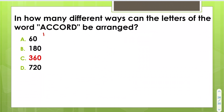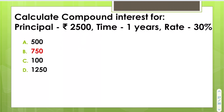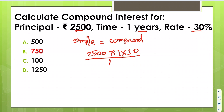How many different ways can the letters of the word ACCORD be arranged? Count the letters: six letters total. Write six factorial divided by the factorial of any repeated letters. The letter C repeats twice, so divide by two factorial. That gives 6 × 5! = 720 ÷ 2 = 360 ways. For compound interest: when time is one year, simple and compound interest are the same. So calculate: 2500 × 1 × 30/100 = 750 as the interest.